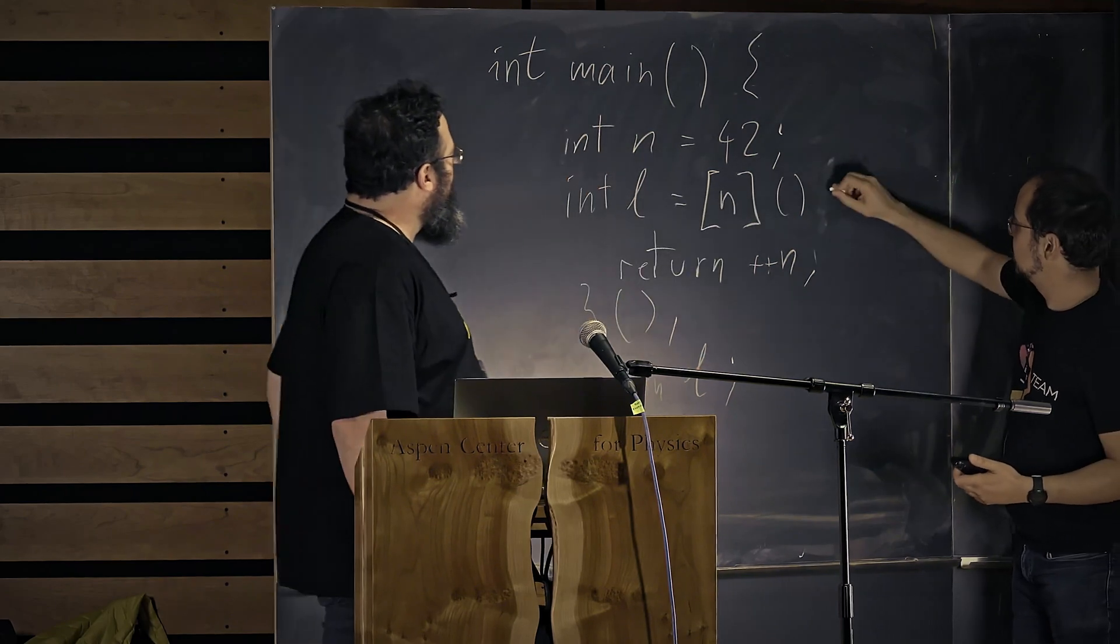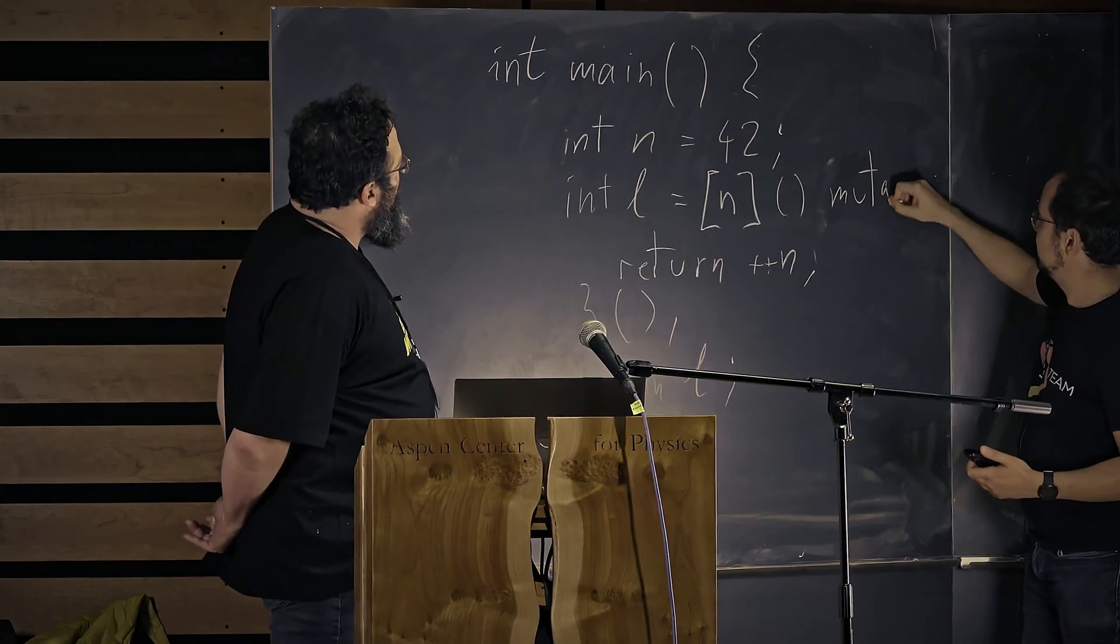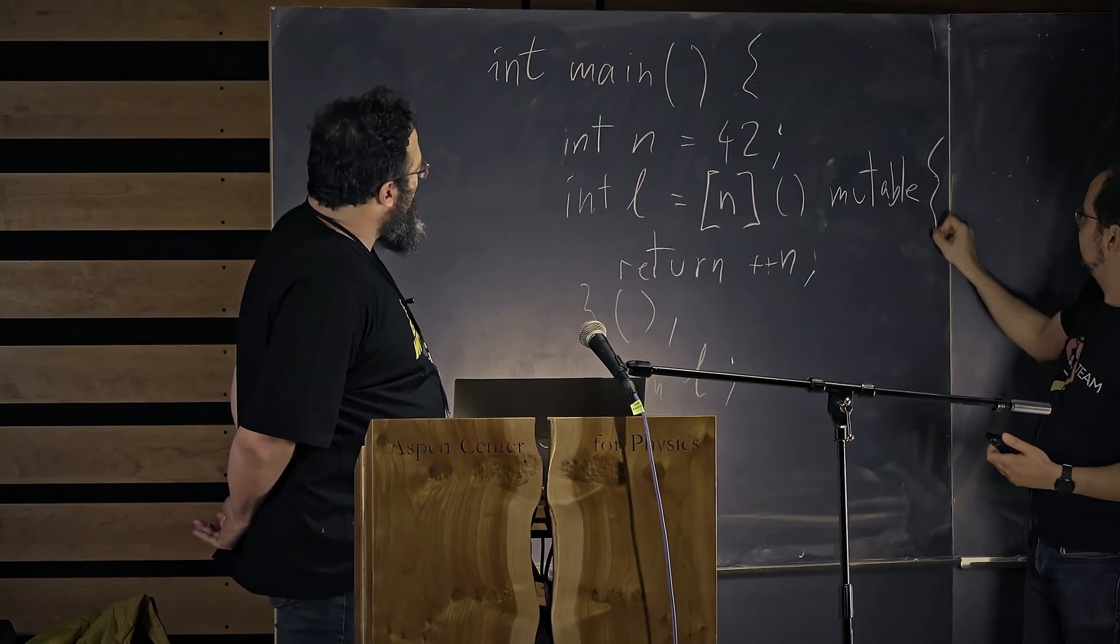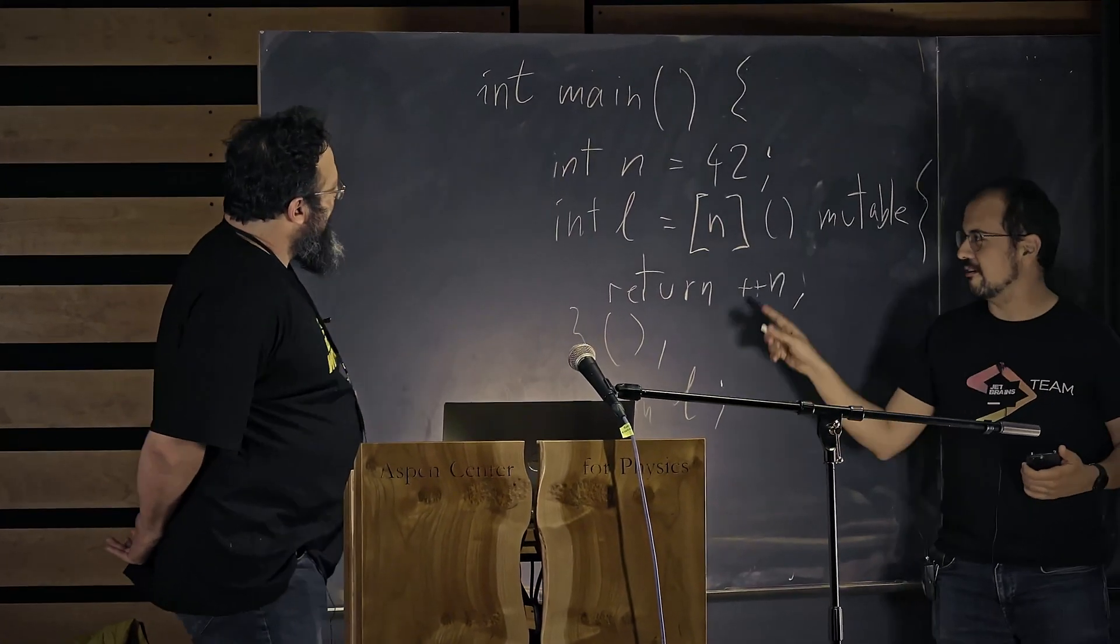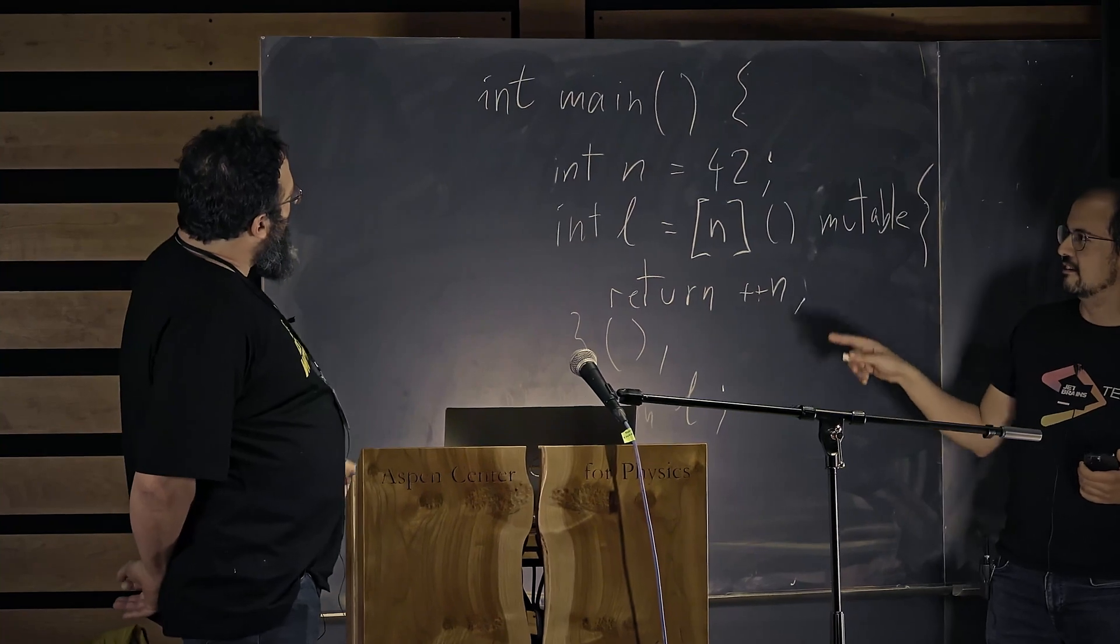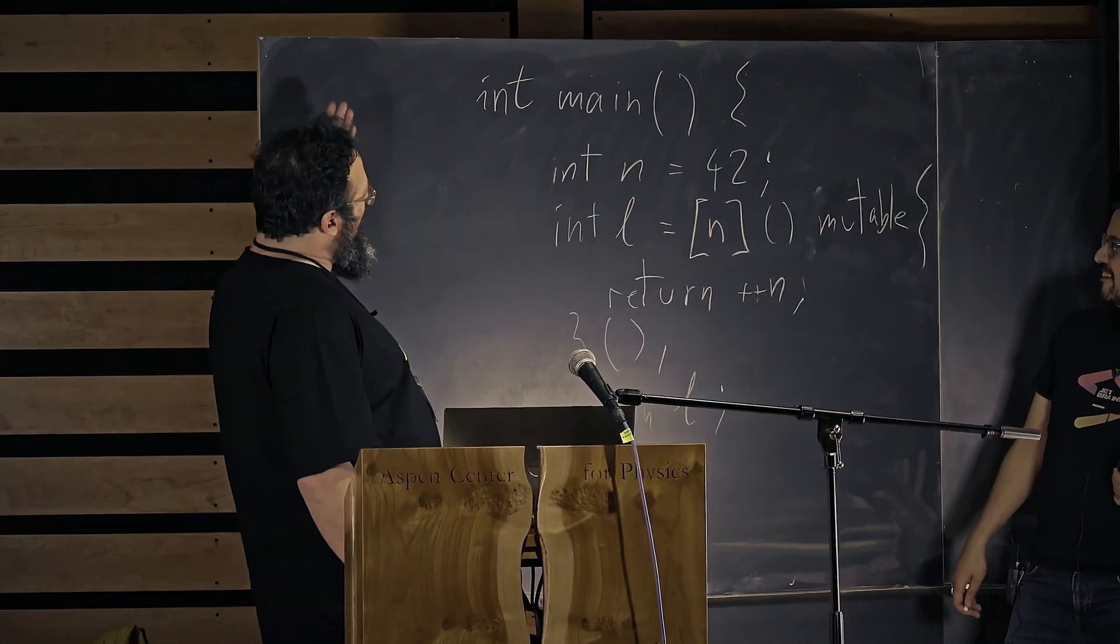We need to put a mutable here. I think it goes after the paren, right? Yeah. So this is going to work, right? This compiled, but we know we kind of unbalanced the universe. We've introduced a mutable. We need to put a const somewhere. Yeah.